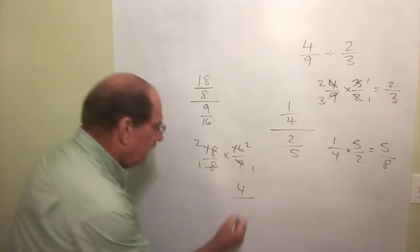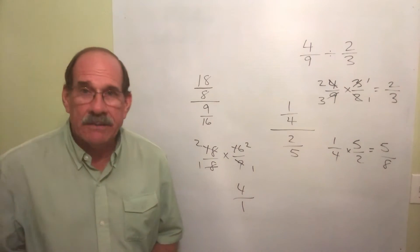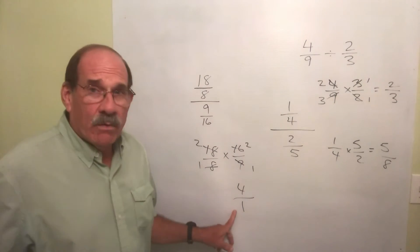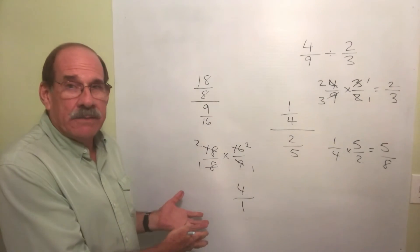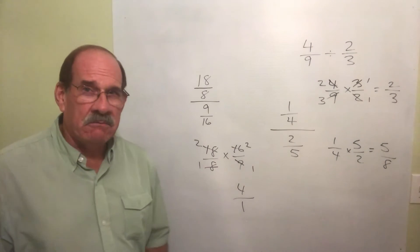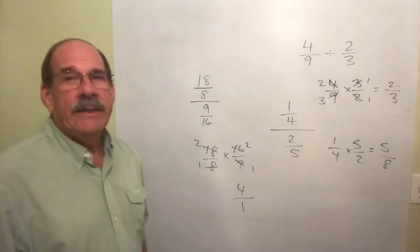4. 1 times 1 is 1. Now here's what I want to talk about: any number over 1 is just that number. You would never leave it that way. You wouldn't say the answer is 4 over 1. The answer is what?